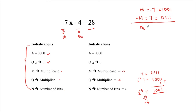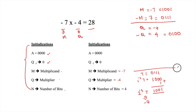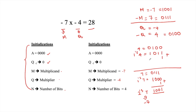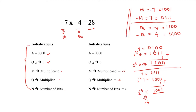Similarly, we calculate Q and minus Q. Q equals minus 4, so minus Q equals 4. Binary equivalent of 4 is 0100. The 1's complement of 4 is 1011. Adding 1: 1 plus 1 is 0 carry 1, again 1 plus 1 is 0 carry 1, and the remaining bits give 1100. So the 2's complement of 4 is 1100. We have now calculated M, minus M, Q, and minus Q.